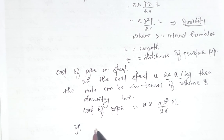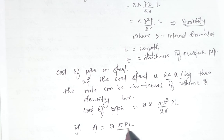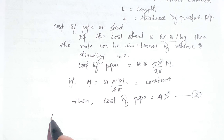If we consider that A times π·p·l divided by twice of sigma equals a constant, then the cost of pipe equals that constant times d squared. Since π·p·l divided by twice of sigma is treated as a constant, the cost simplifies to A times d squared. This is equation two.